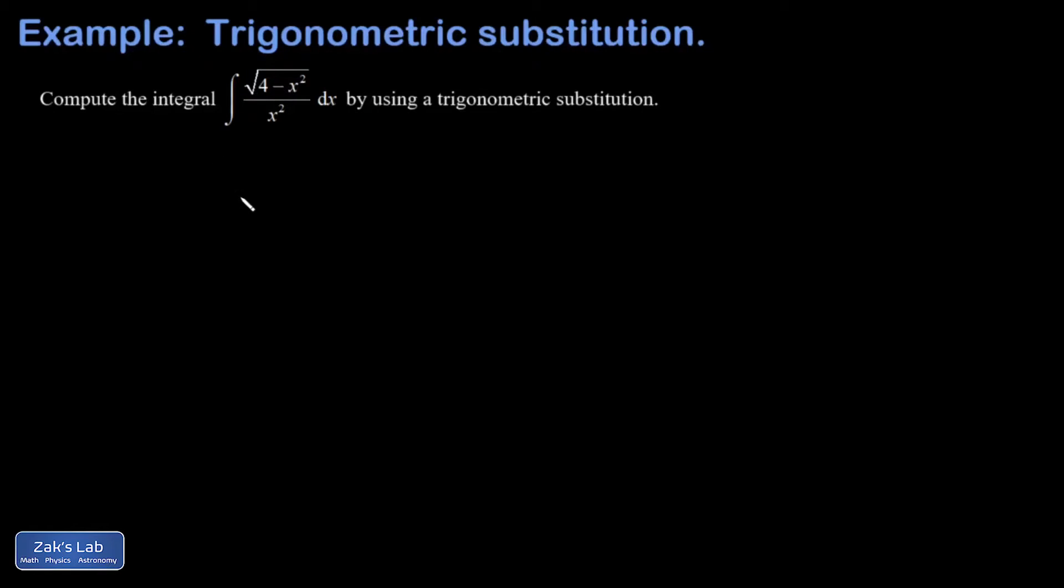Here's a trig substitution integral where we're in a very familiar spot. We have a square root that we want to get rid of by expressing its interior as a perfect square by using a trig substitution. And so I have a constant minus a variable thing squared.